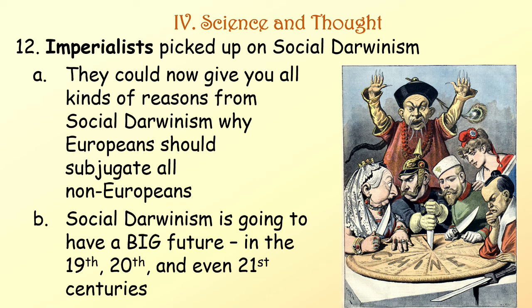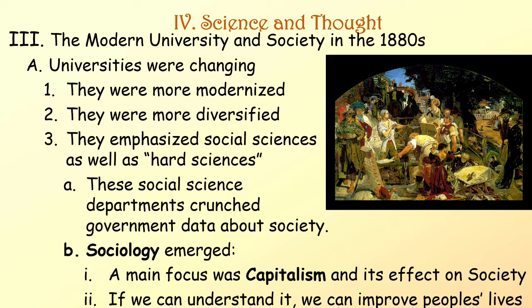The modern university and society in the 1880s. Universities were changing — more modernized, more diversified. They emphasized social sciences as well as the hard sciences. And these social science departments started to crunch government data about society. A new science called sociology emerged. The main focus was capitalism and its effect on society. If we can understand capitalism, can we improve people's lives?